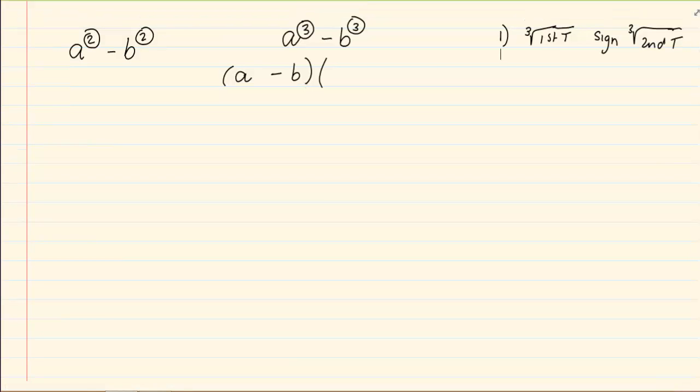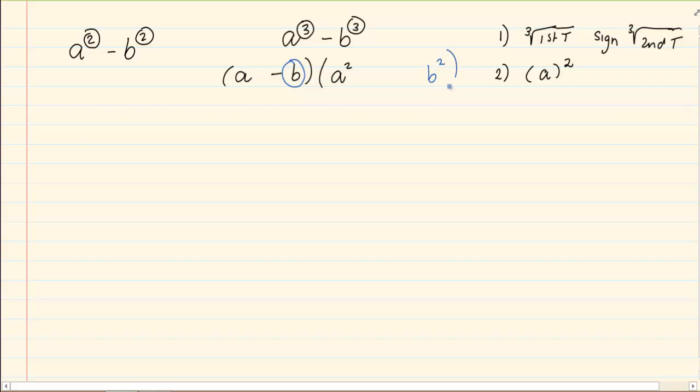But what happens to the second bracket? You're going to take the first value in the first bracket and you are going to square it. That would give me the first term. Then you would square the second term in the first bracket and that would give me my last term.